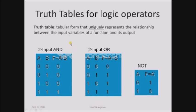These are the truth tables for those operators. A truth table represents the relationship between the input variables of a function and its output, showing the possible combinations of inputs and their outputs. For the two-input AND gate, a and b are the inputs, and the output function f = a AND b. With two input variables, there are four possible combinations.